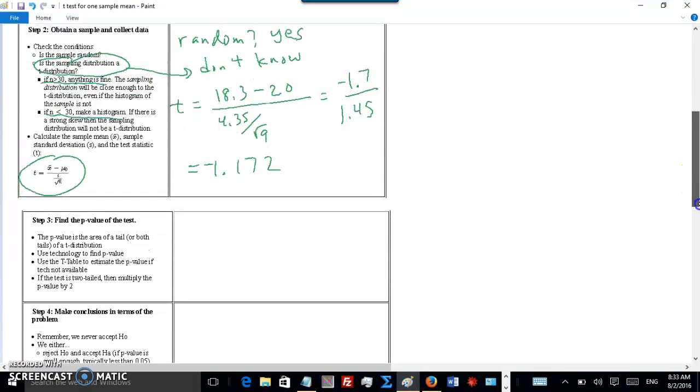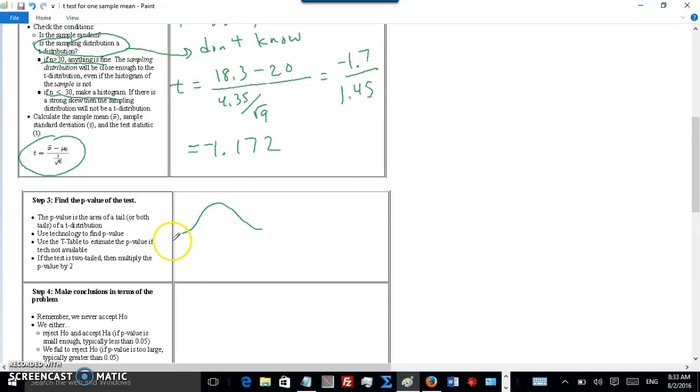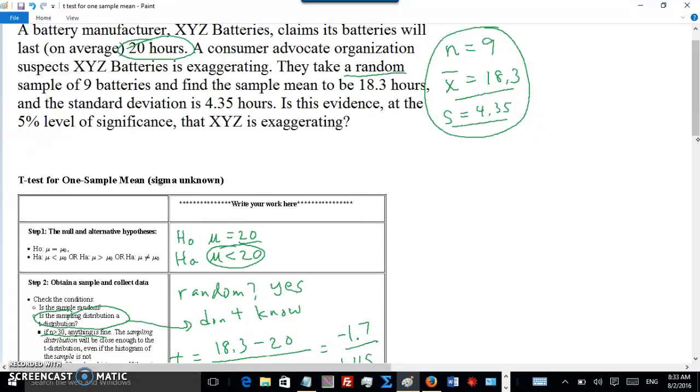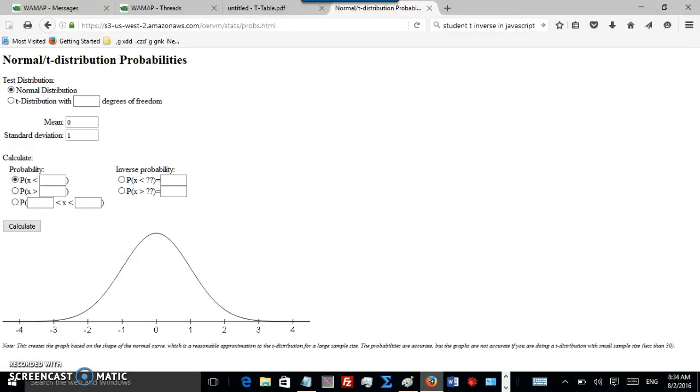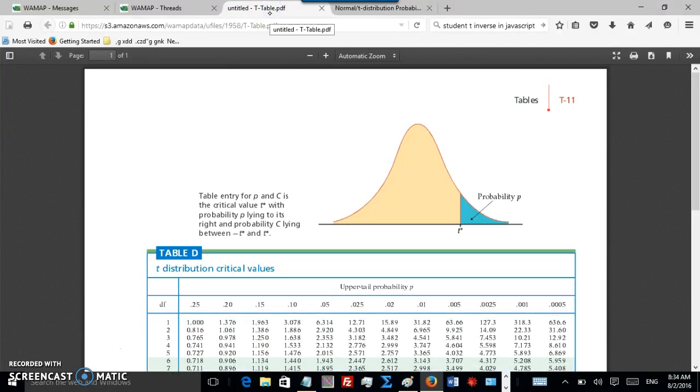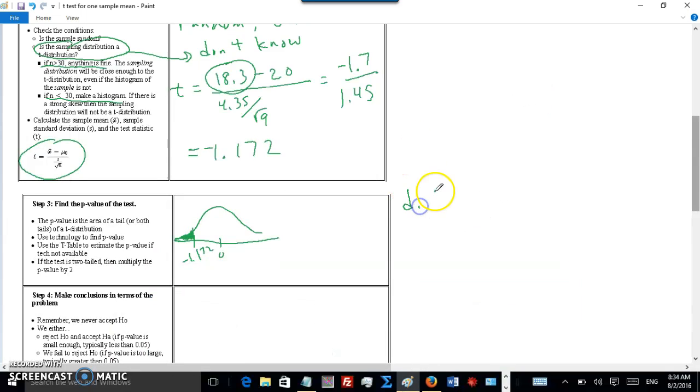Step three: p-value. So let's draw a quick picture of our T-distribution, our sampling distribution here. Zero is in the middle. Negative 1.172 is down here. Our alternate hypothesis says mu is less than 20. That means we're looking at the left tail. We want to know the probability of, if we have a random sample, what's the probability that if the true population mean was 20, what's the chances of getting a sample mean of 18.3 or lower? That's what we're trying to answer. Now, by looking at the picture, it doesn't look like a whole lot, but there's a couple options here. One option is use the table. I've got the table right here. Our degrees of freedom is 8. Let's write that down on our screen here. Degrees of freedom is 8. It's always one less than sample size.